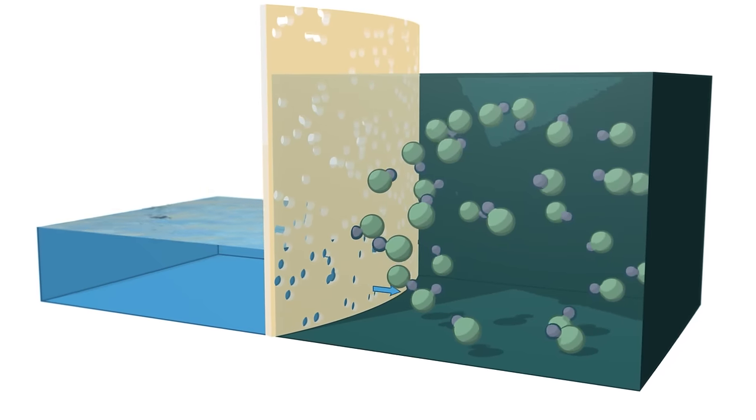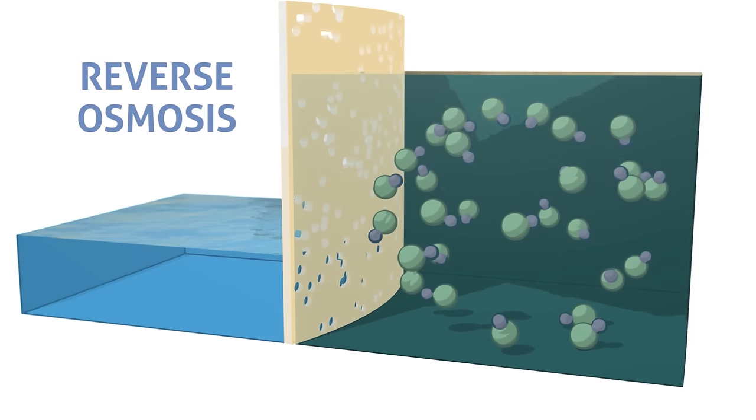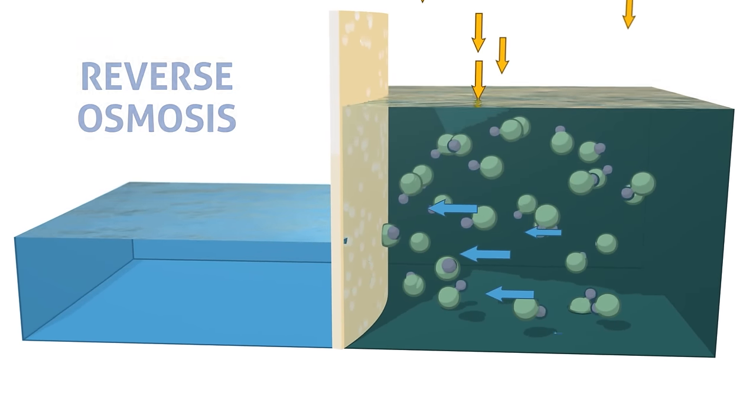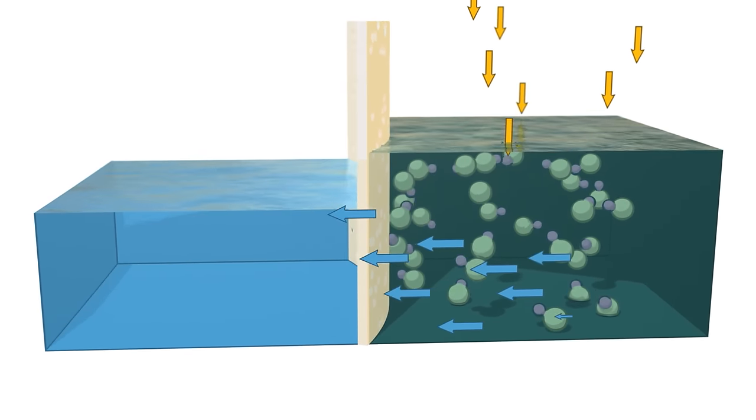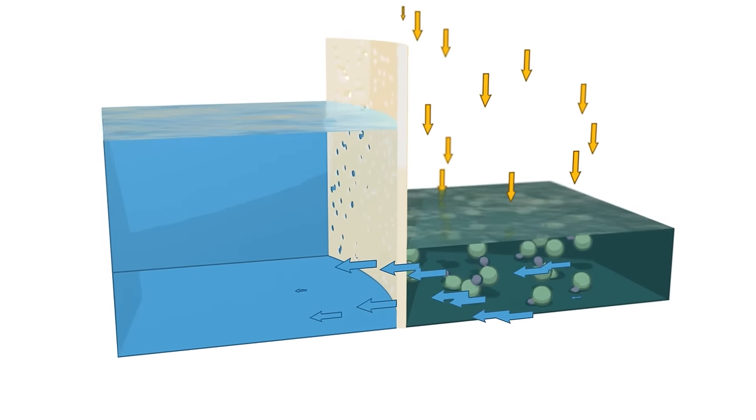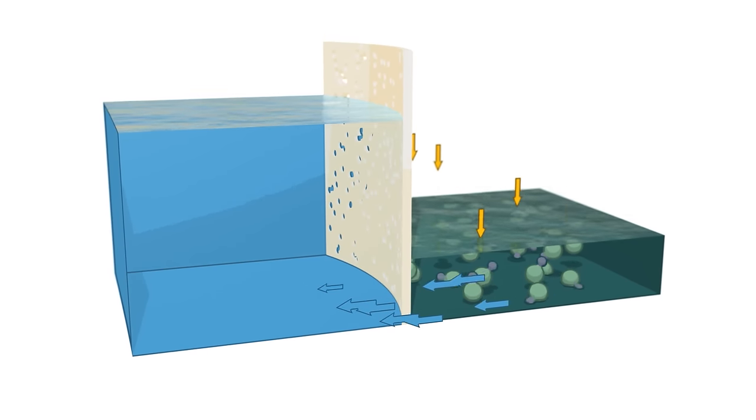When the direction of liquid flow is reversed, it's called reverse osmosis. By pressurizing the concentrated solution, in this case seawater, we are able to force water molecules in the reverse direction, from the salty seawater side, through the membrane, to the freshwater side.